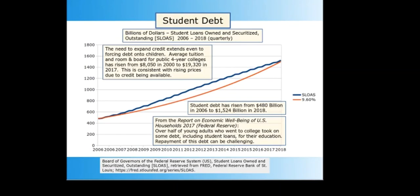Student debt has risen from $480 billion in 2006 to $1,524 billion in 2018, roughly matching a 9.6% compound rate. Student debt is a relatively new area for debt expansion. The social consequences of indenturing young people for their education are being experienced, and the growing demands for student debt relief and free education represent a possible setback for the banking cartel.